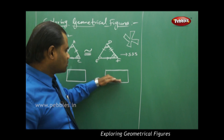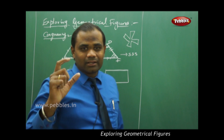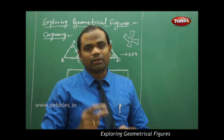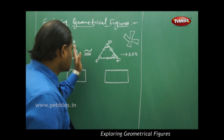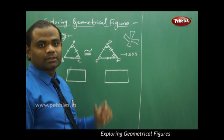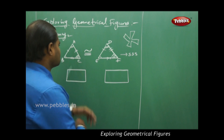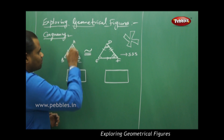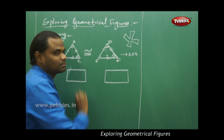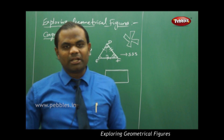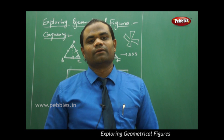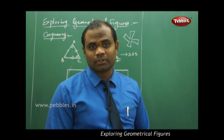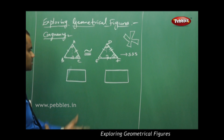Before we go further, when two triangles or two different geometrical shapes are congruent, they are said to be equal in all respects. Their areas would be the same, their angles would be the same, their line segments would be the same, the perpendicular heights drawn from one vertex will also be the same. There are many properties which become equal when two geometrical objects are congruent — that is how congruency holds for triangles.